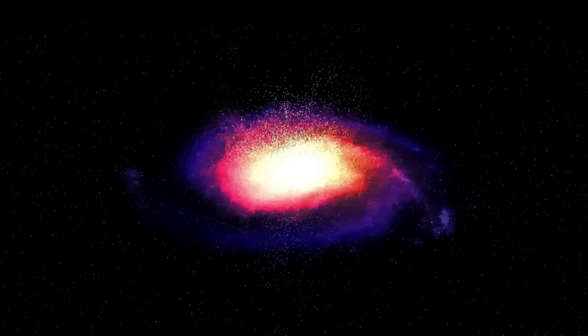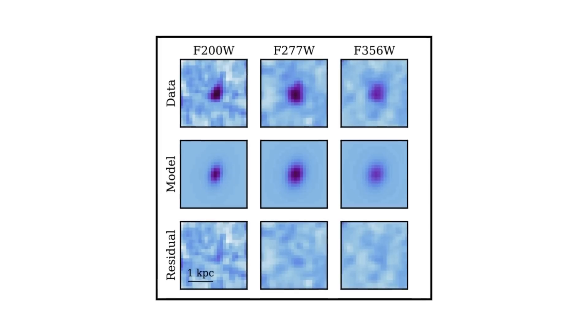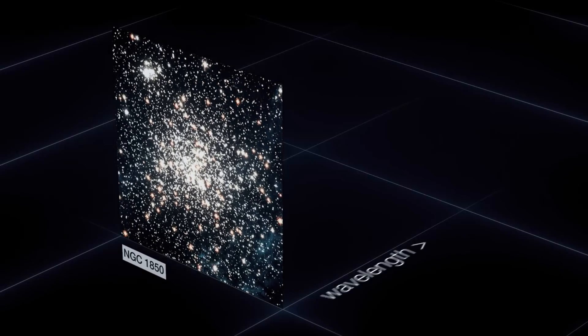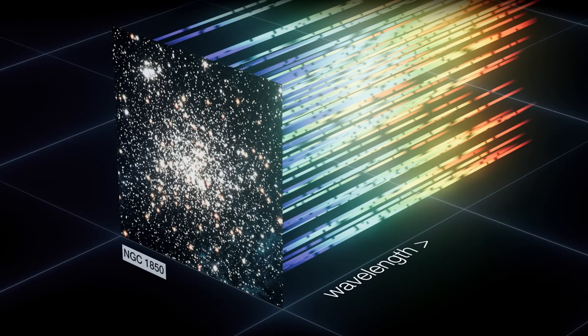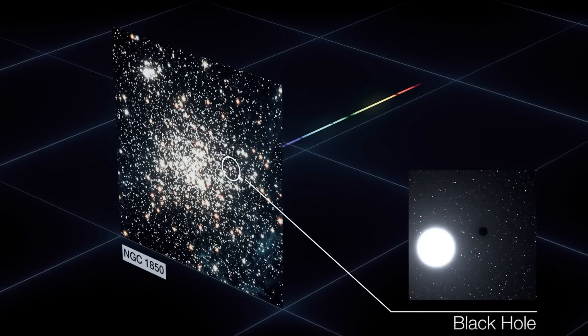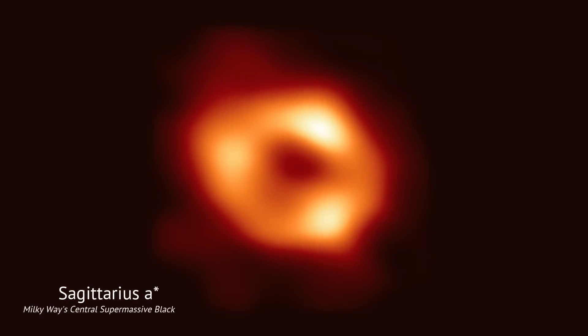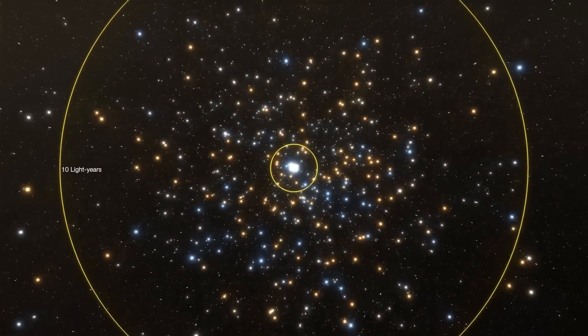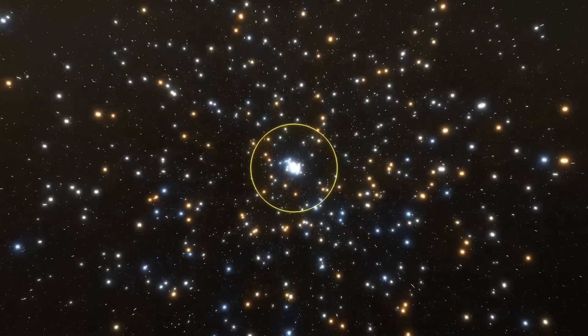But one feature, or rather, the absence of one, made it even stranger. There's no sign of a supermassive black hole. Most of the galaxies we've studied with intense star formation host a supermassive black hole at their center. These black holes are thought to play a key role in galaxy evolution, regulating star birth, shaping structure, and driving growth. But MACS0647-JD doesn't.